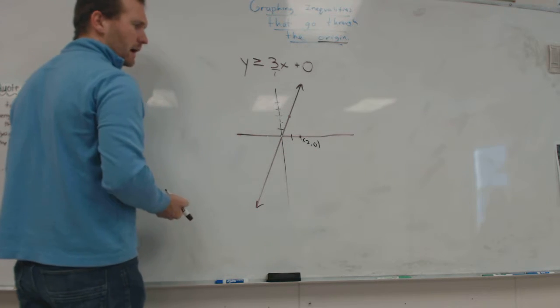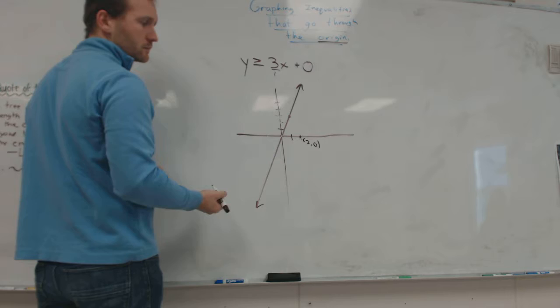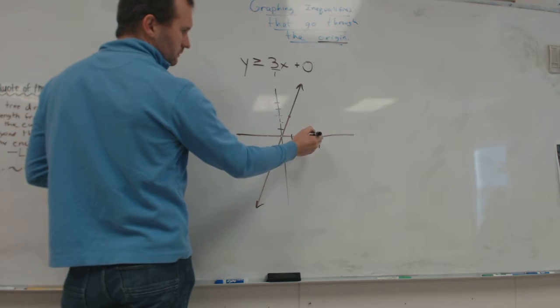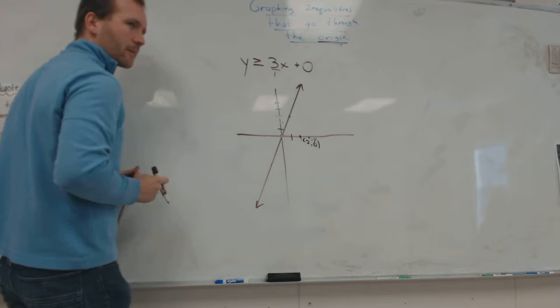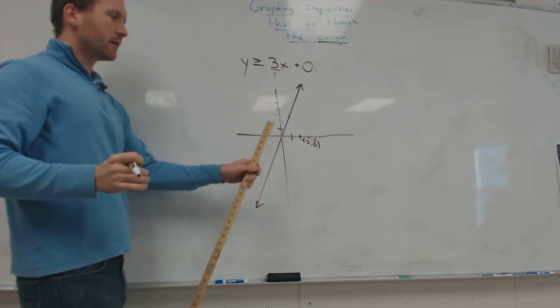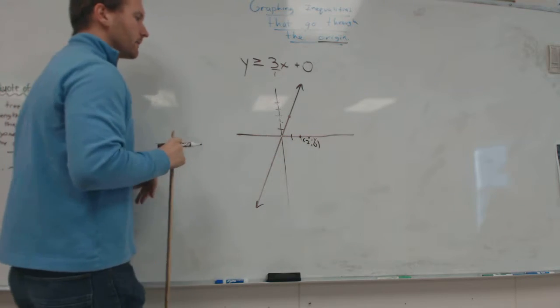Which one is the x and which one is the y? Y is 2 and x is probably 0. Always in alphabetical order, right? It's always x comma y.